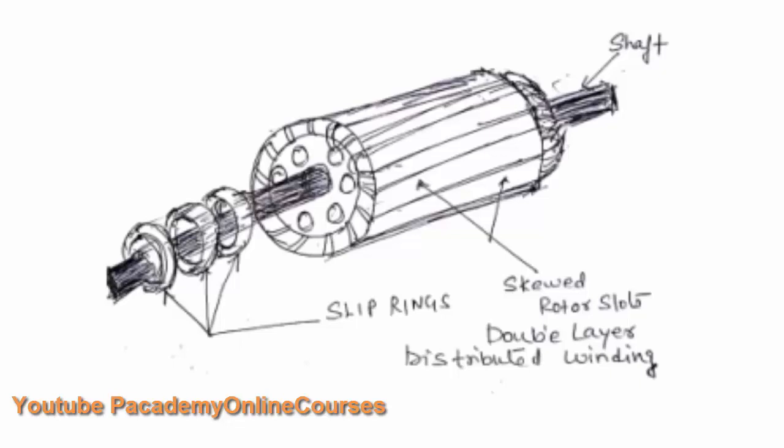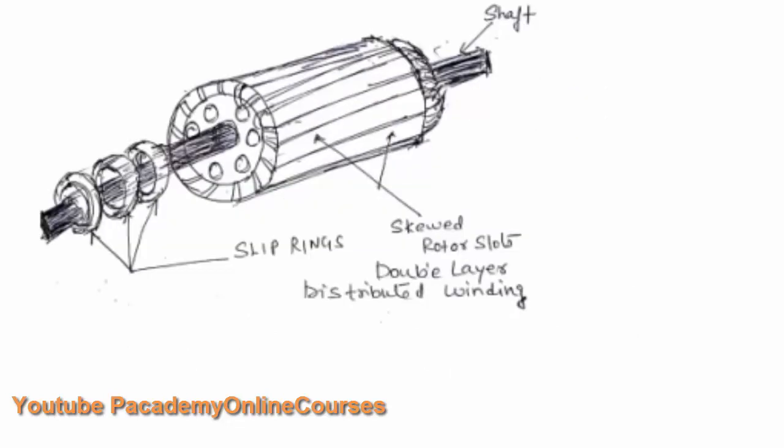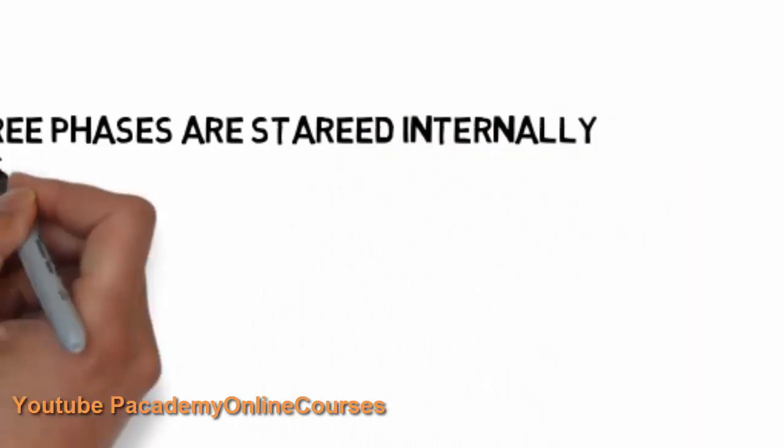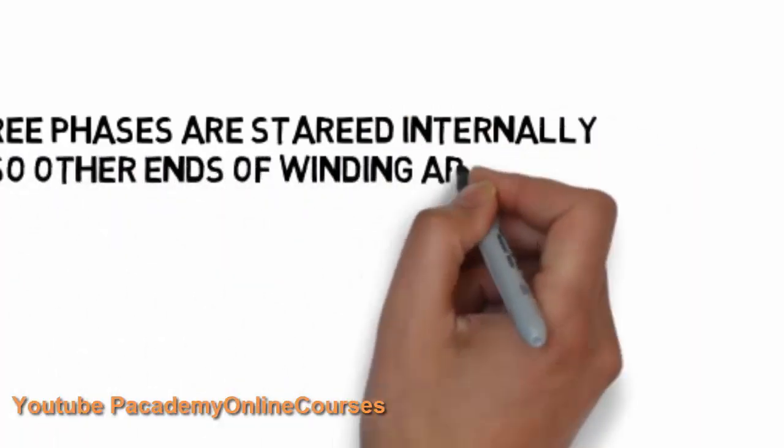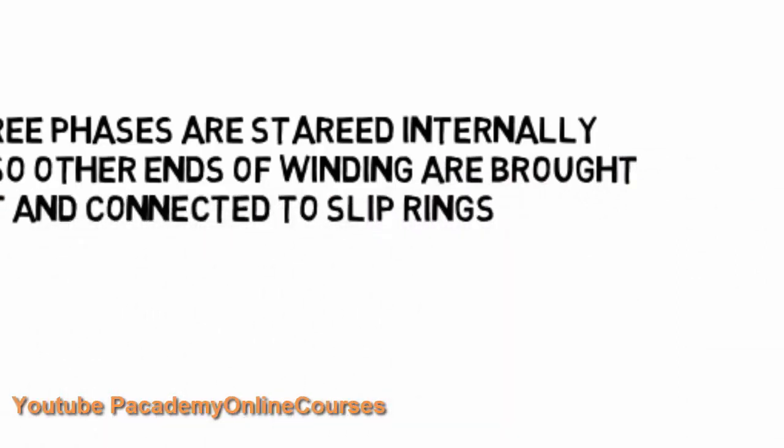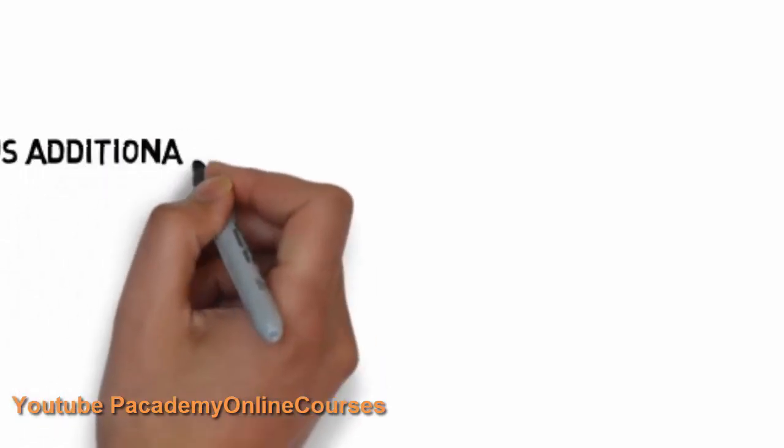The three phases are star connected internally. The other ends of the winding are brought out and connected to the slip rings to the external resistance circuit via brushes. The brushes will be lifted during normal running after the motor starting purpose is fulfilled. Thus addition of starting resistance is possible.